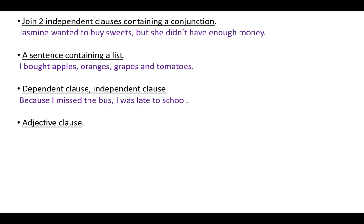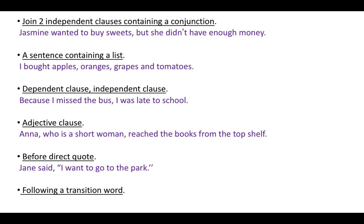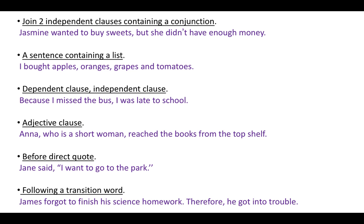An example of commas used in an adjective clause is: 'Anna, who is a short woman, reached the books from the top shelf.' An adjective clause provides extra information in a sentence — here it provides extra information about Anna. An example of a comma used before a direct quote is: 'Jane said, I want to go to the park.' An example of a comma used following a transition word: 'James forgot to finish his science homework. Therefore, he got into trouble.' The transition word is 'therefore', and the comma comes after it.